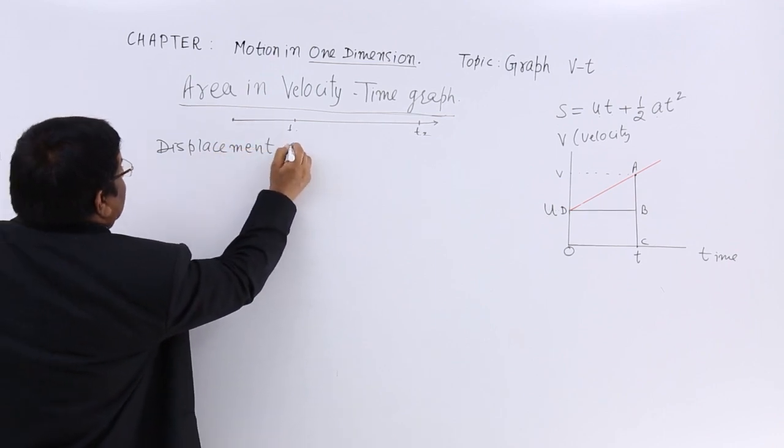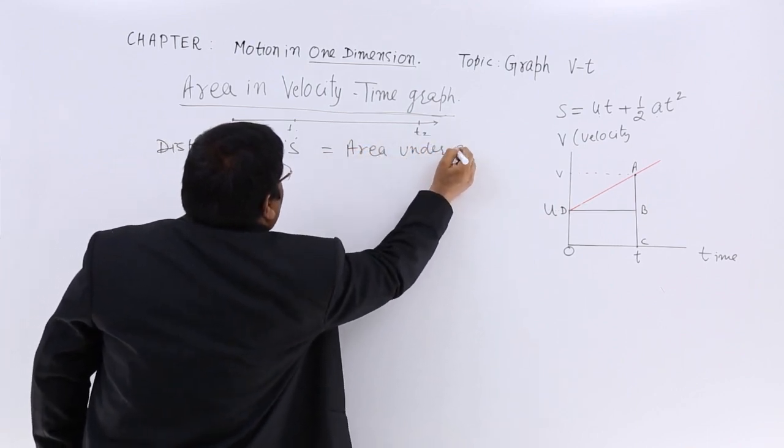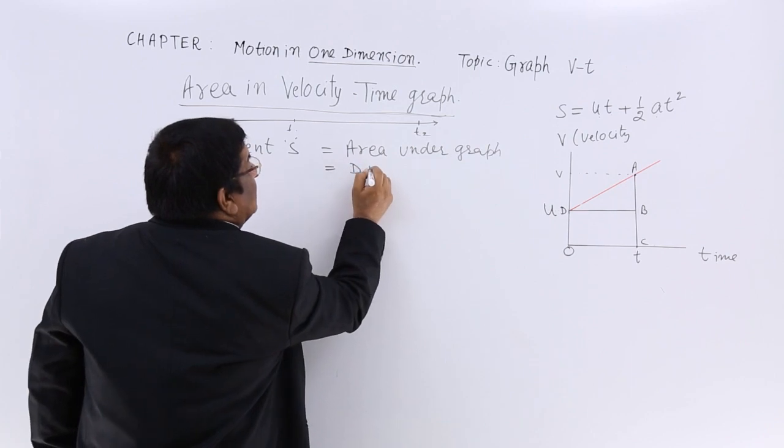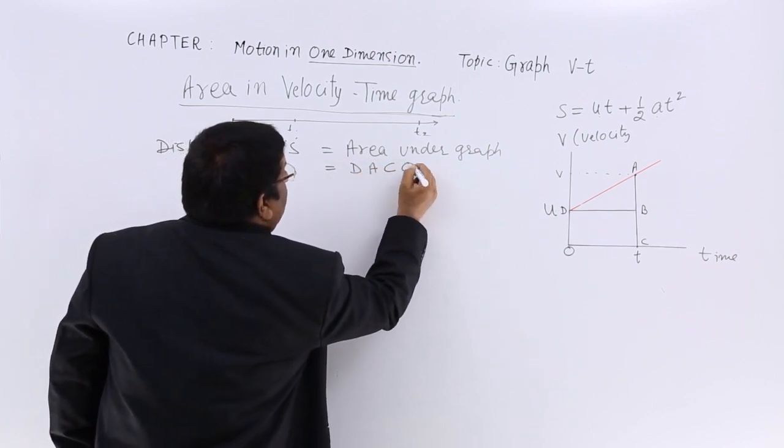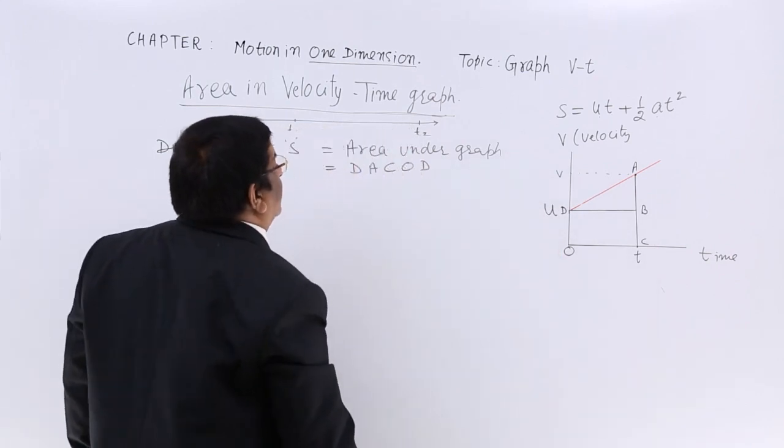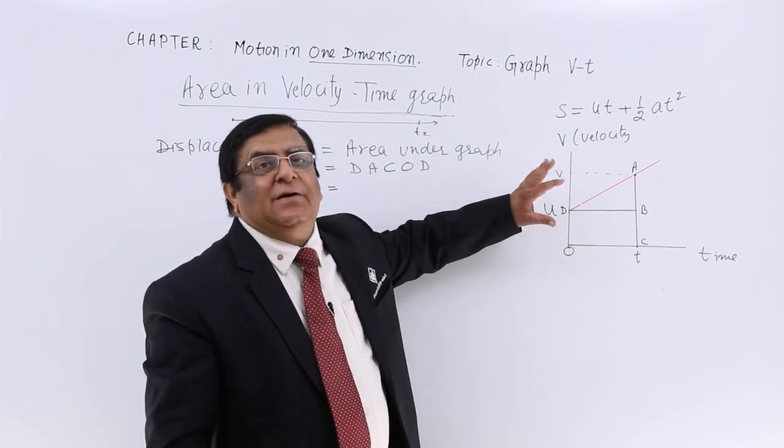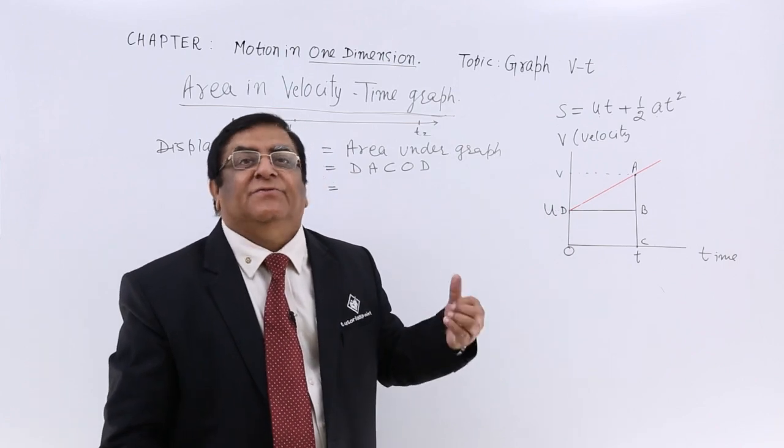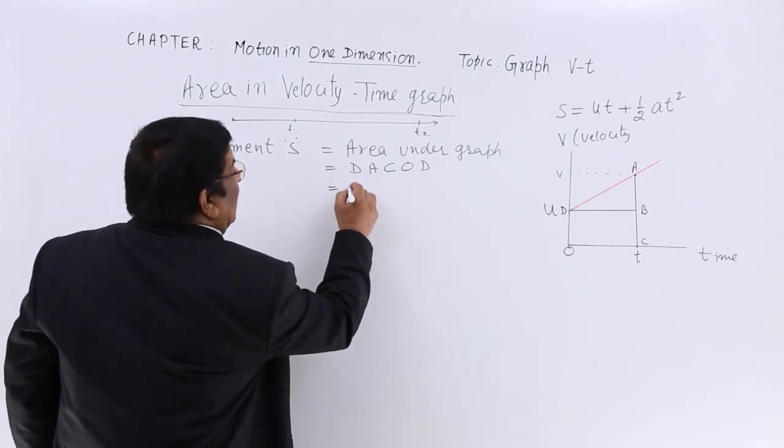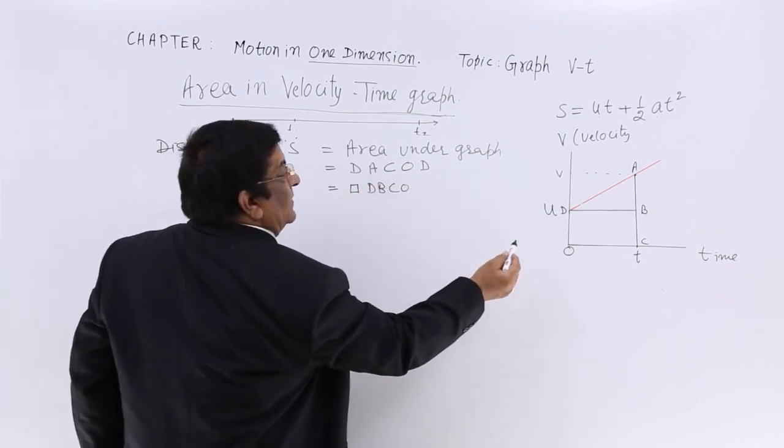Displacement s is equal to area under graph. What is area under graph? Here area under graph is D, A, C, O, D. This is the area under graph. Now this area under graph I want to measure, and as it happens in geometry we divide any unsymmetrical area into symmetrical shapes for which we know the formula. So this shape we divide into two shapes: number one is rectangle D, B, C, O. This rectangle.